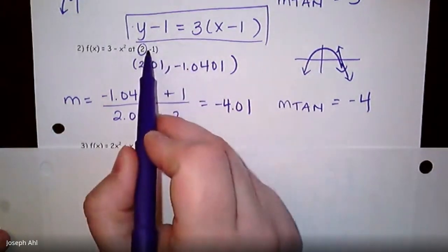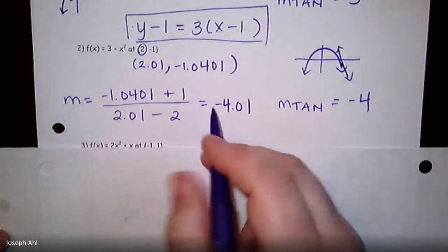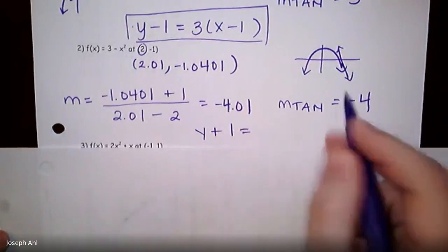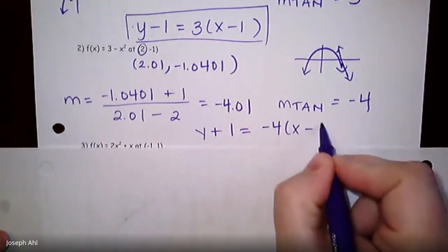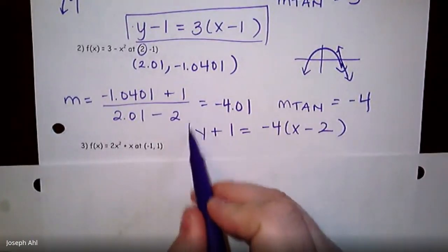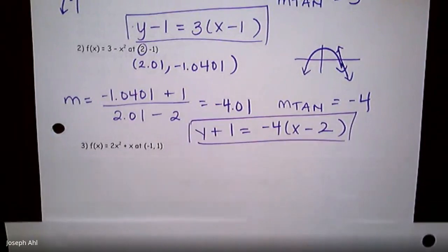All right, the slope is negative 4 and it goes through the point 2 negative 1. The equation is y plus 1 equals negative 4 times x minus 2. Okay, one more I'm going to do.